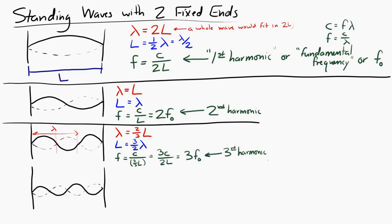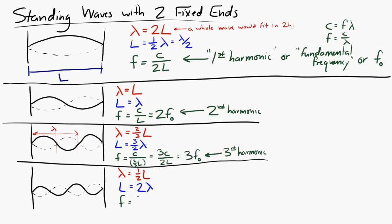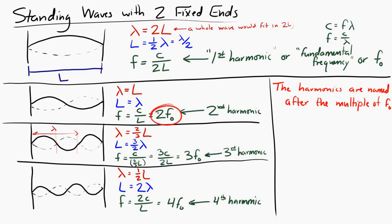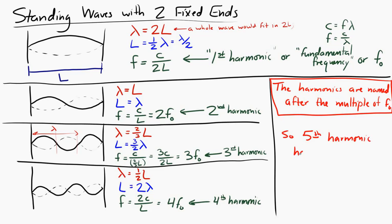In the next one, the wavelength is 1/2 of L, so the frequency equals 2C over L — that's 4 times the fundamental frequency. This is the fourth harmonic. You're starting to see the pattern: the harmonics are named after the multiple of the fundamental frequency. The first harmonic is the fundamental frequency, the second harmonic has twice the fundamental frequency, the third has 3 times, and so on. The number of the harmonic is how many times greater that frequency is than the first harmonic. So the fifth harmonic would have 5 times the frequency of the first harmonic.